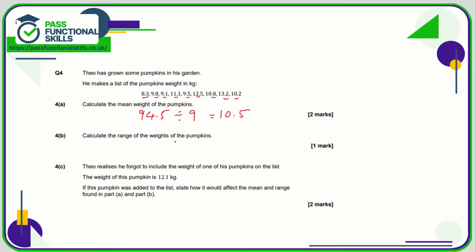The range is the weight of the heaviest pumpkin minus the weight of the lightest pumpkin. The heaviest is 13.2 and the lightest is 8.3, and 13.2 minus 8.3 is 4.9 kilos.